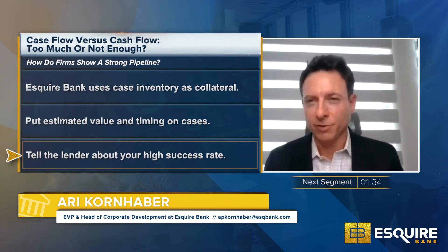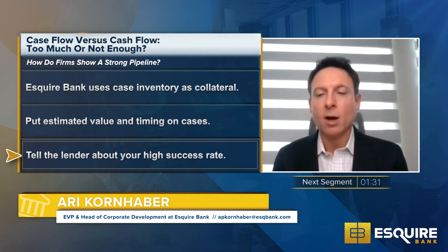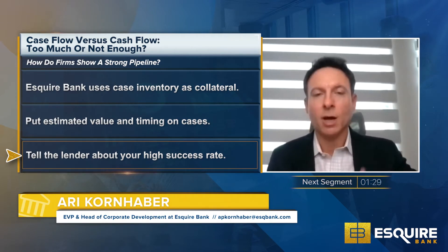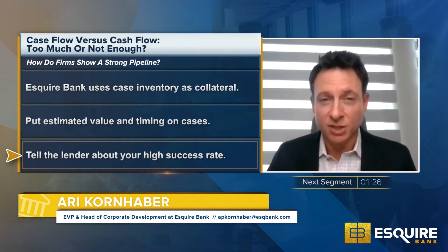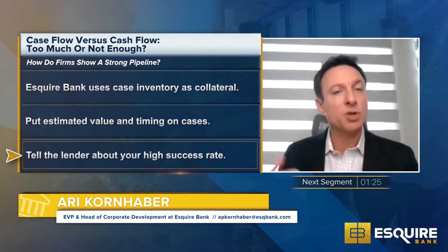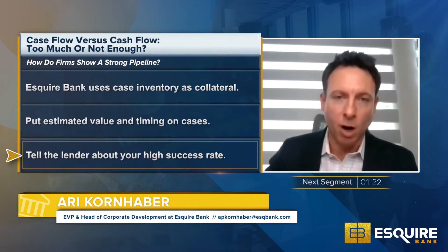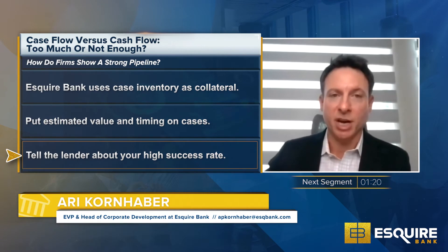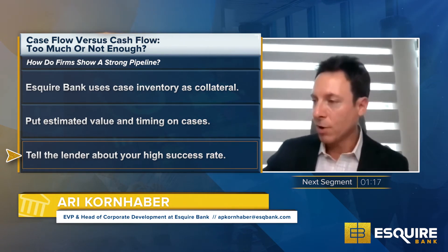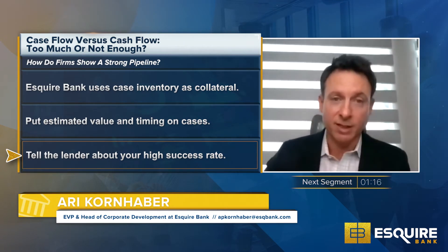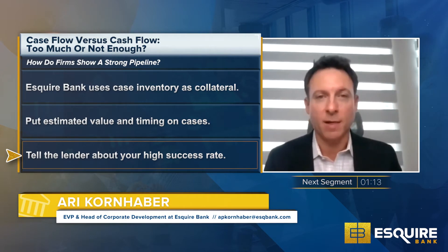In terms of demonstrating a strong pipeline, come up with projected values, timing, how much you have out in case costs today, and how much more you're projecting to spend in case costs on your current docket over the next three years. That's your snapshot — the revenue you're going to generate and the case costs you're going to recoup in the next 36 months.